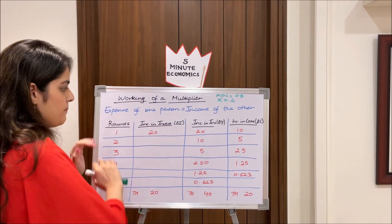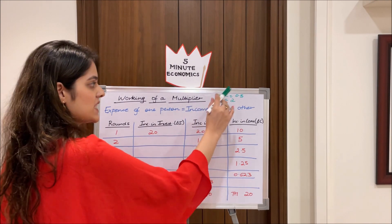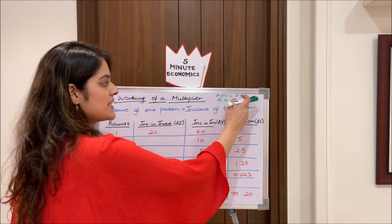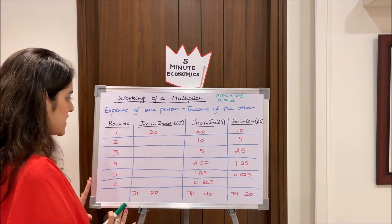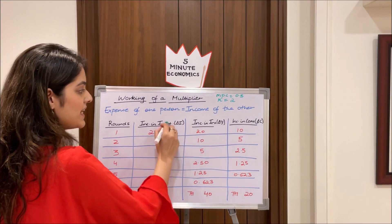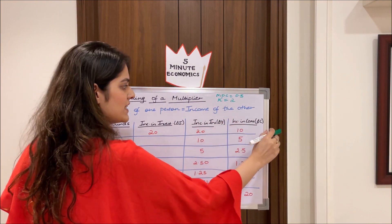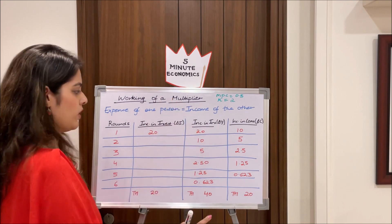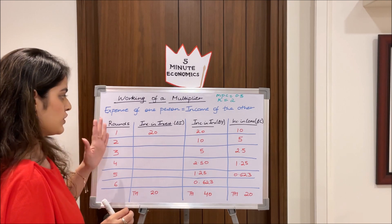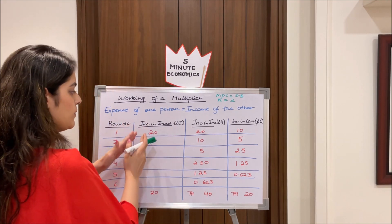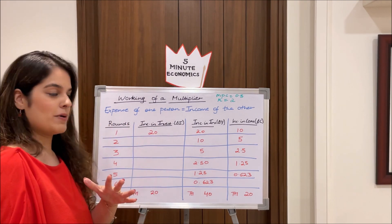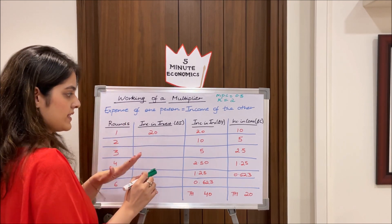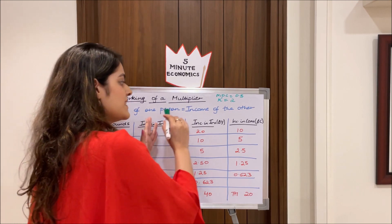In our table, MPC is assumed to be 0.5, so using the formula we can calculate k = 2. The table has six rounds, with columns for increase in investment (ΔI), increase in income (ΔY), and increase in consumption (ΔC). In the first round, the increase in investment is 20 crores — this is the autonomous investment. In round one, the increase in income equals the increase in investment, both 20 crores.